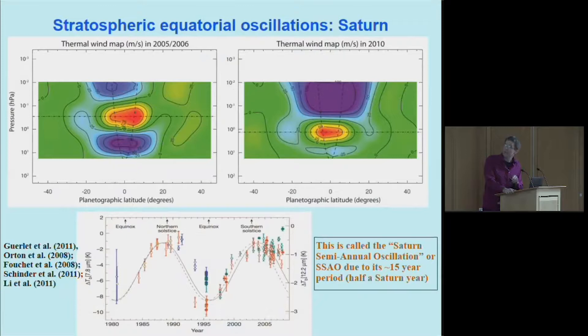Basically, the wind pattern consists of vertically stacked eastward and westward low-latitude jets that are shown here. Red is eastward anomaly, blue is westward anomaly at the equator. The interesting thing is that the stacked pattern of eastward and westward jets migrates downward over time. The location of this eastward jet has moved downward over the five or six years from 2005 to 2010. This is from Cassini observations.